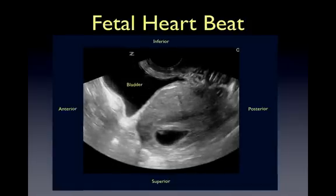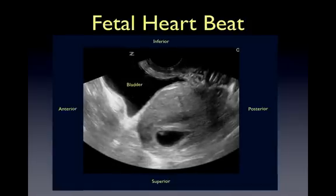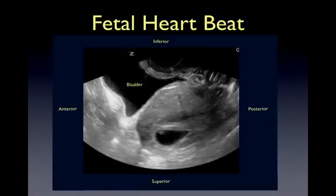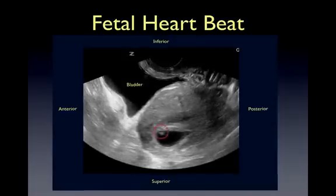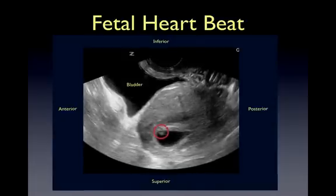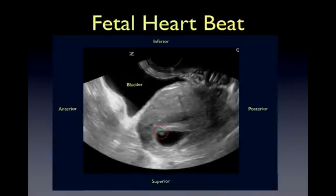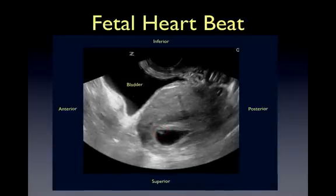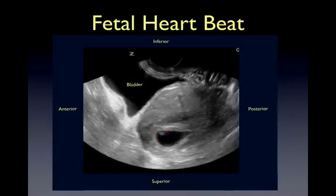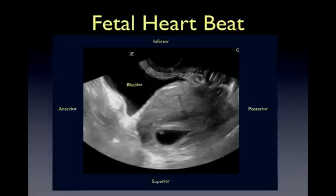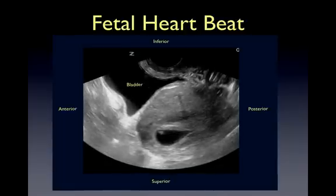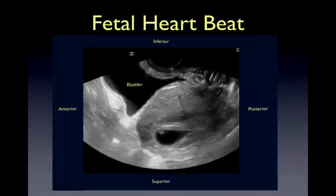By 6-7 weeks gestation, a fetal heartbeat should be visualized. It often appears as a flicker and should be measured via M-mode once detected. A normal fetal heart rate is typically 110-180 beats per minute, with a slower rate observed at 6 weeks and a faster rate observed around 10 weeks.